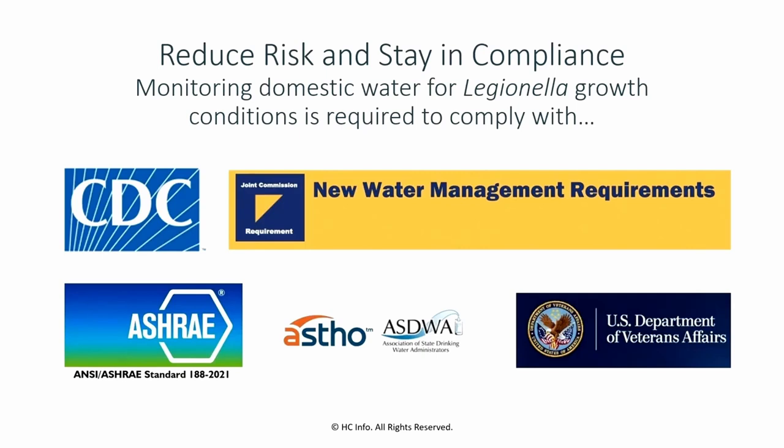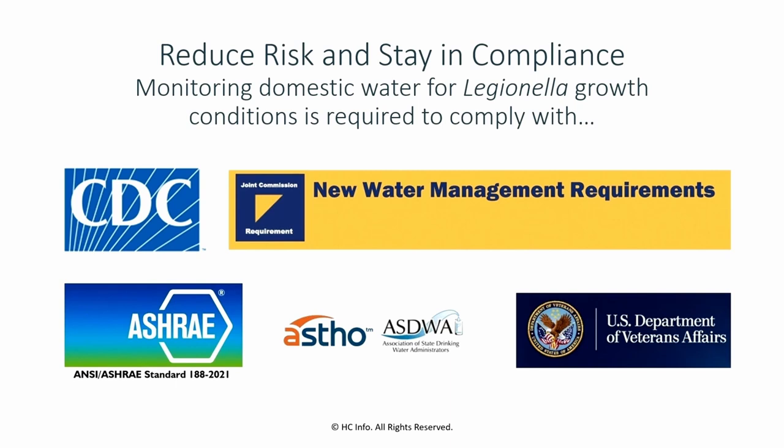Some of the documents that are requiring it: VHA Directive 1061, the new standard by Joint Commission that hospitals accredited by Joint Commission have to follow. The Association of State Drinking Water Administrators, along with the Association of State and Territorial Health Officials, came out with a document specifically on monitoring water quality. It's in ASHRAE 188, and the CDC has a document on monitoring water quality — in their water management plan checklist, they have a list of parameters to consider testing for. So all of these documents require it. Why does it make sense from a risk reduction standpoint to test not just for Legionella, but for conditions that can affect Legionella?